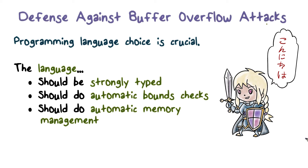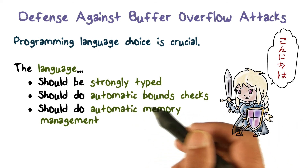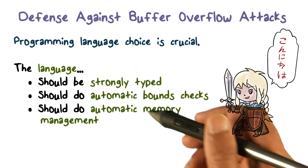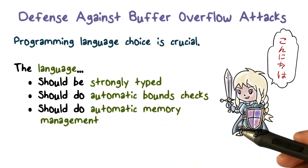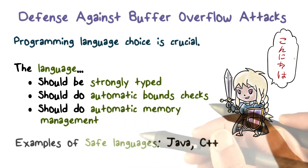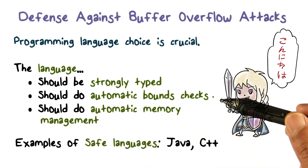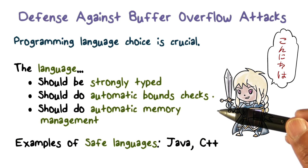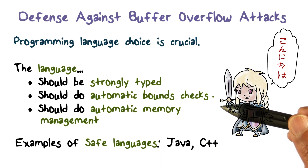The type of variable determines how much memory is required and allocated to it, and how much memory you can access when you access that variable. This is the bounds check we're talking about. If you manage memory automatically, the problem of memory overflow and abusing memory the way we did with buffer overflows goes away. Languages that do this are called safe languages, because you can rely on type safety and you don't make these kinds of mistakes.